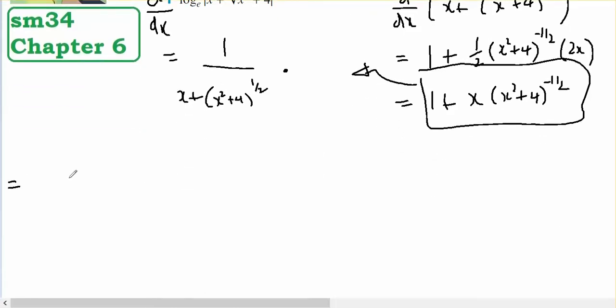We've got equals 1 on top of x plus x squared plus 4 to the half, times 1 plus x on top of x squared plus 4 to the half.